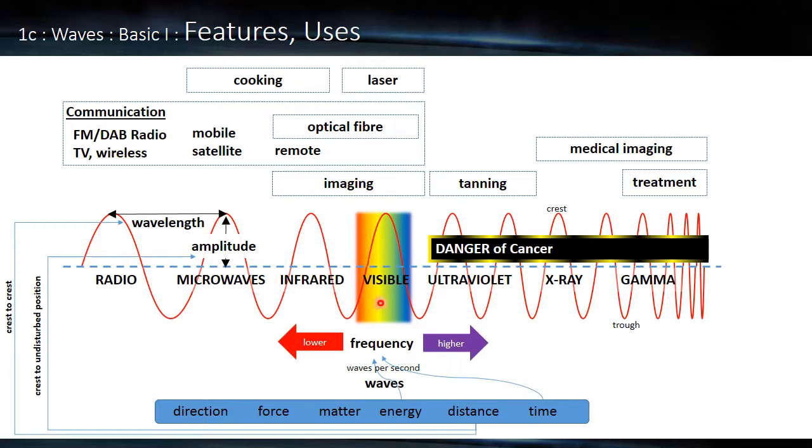So visible light is the one we're most familiar with because we can detect it ourselves. Fairly obviously it's used for imaging. It's also used for optical fibers and it's used in lasers, which actually stands for light amplification by stimulated emission of radiation, but the word light is the L there.